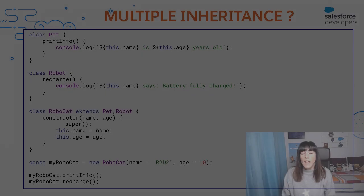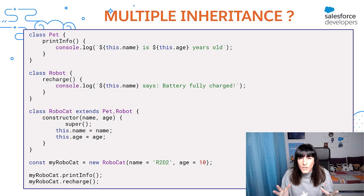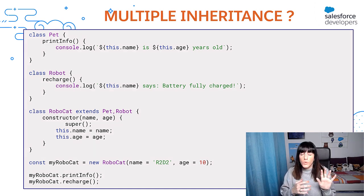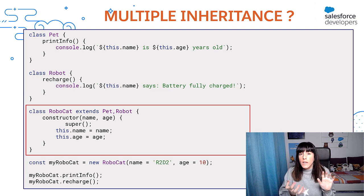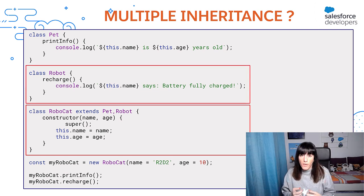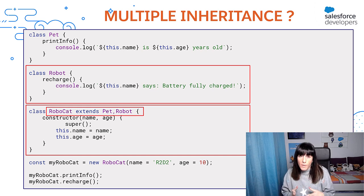That is great, but now let's take a look at a more complex mixin pattern and see in which situations it is beneficial to use it. Let's say that now we want to create cat robots. Robocat is a pet, so we want to use the methods from pet, but we also want to use the methods from robot. However, multiple inheritance is not supported in JavaScript.